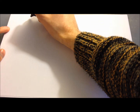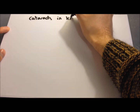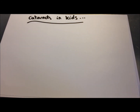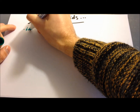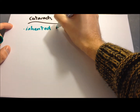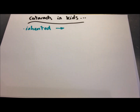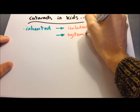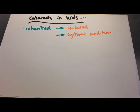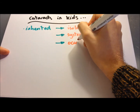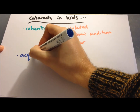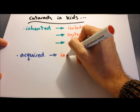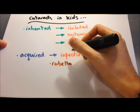Cataracts are normally a disease of adults, but children can get them too. In children they're normally congenital, developmental, or acquired. Congenital or inherited cataracts are the most common cause in the West, and can be isolated or part of a systemic inherited condition such as galactosaemia — an inherited condition affecting galactose metabolism — or an ocular condition such as aniridia, the lack of an iris. Acquired cataracts are less common in the West, but in the developing world infection is the biggest cause, including rubella, measles, and cytomegalovirus.